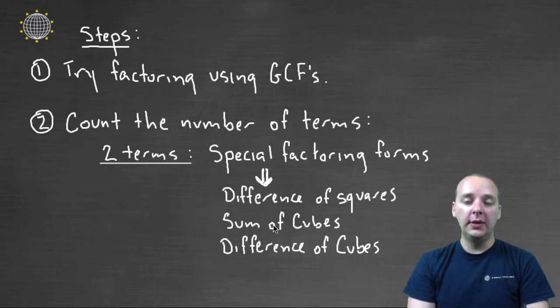And remember, the one that's not listed here is sum of squares. And remember, sums of squares are always prime. So if it'll factor, it'll typically be one of these three here: difference of squares, difference of cubes, or sum of cubes. And that's if it's two terms.